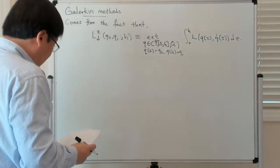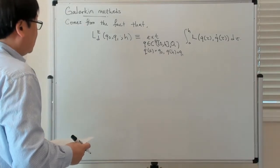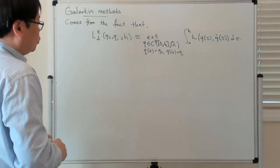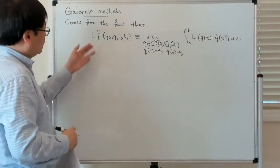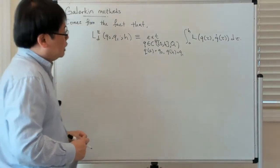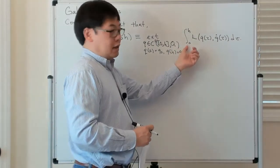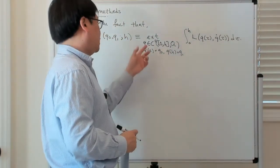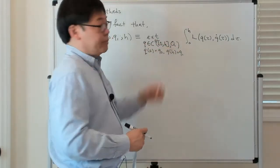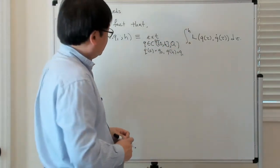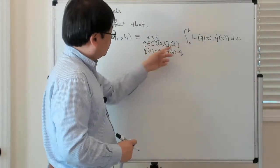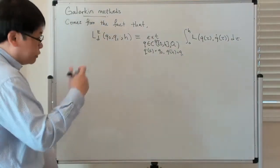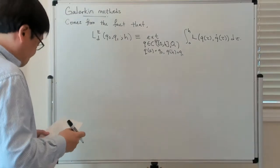With that in mind, this gives a very systematic way of constructing computable approximations of the exact discrete Lagrangian — again, by replacing the integral with some quadrature rule and replacing this infinite-dimensional family of twice-differentiable curves with some finite-dimensional family, for example, polynomials up to some fixed degree.